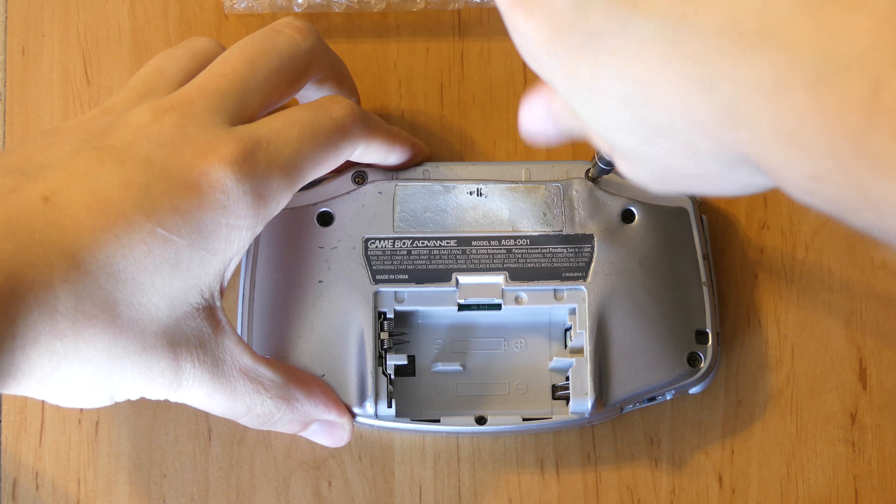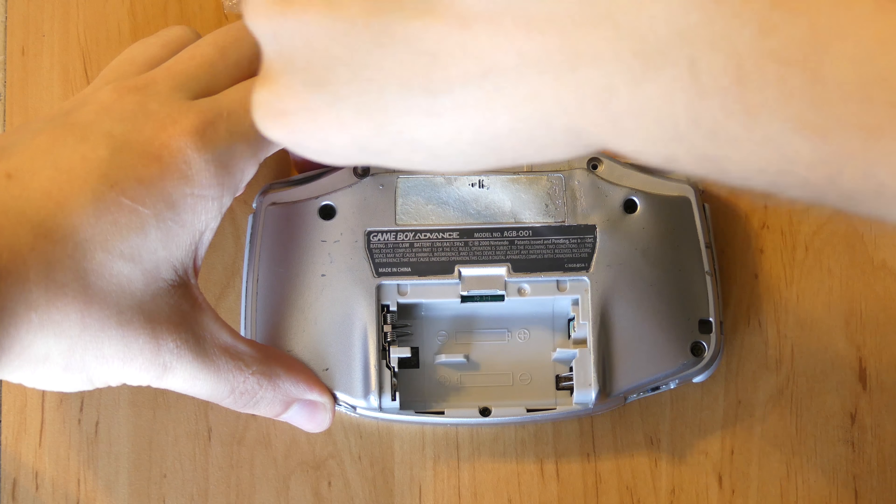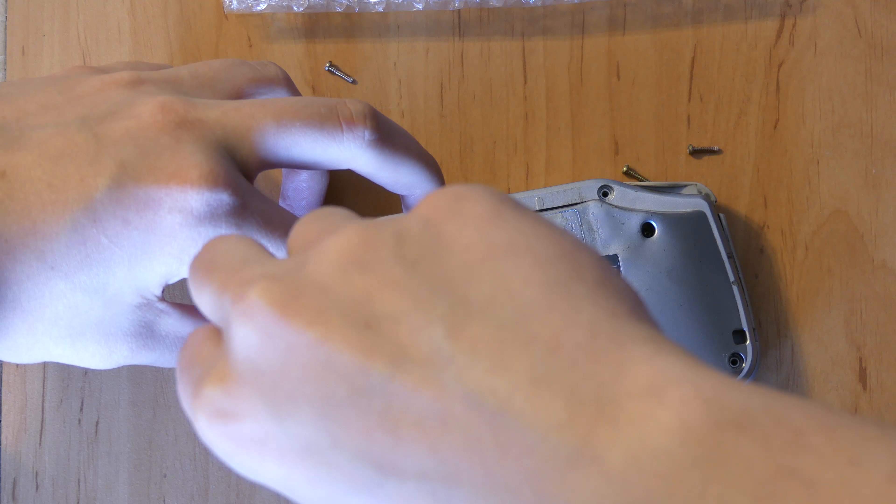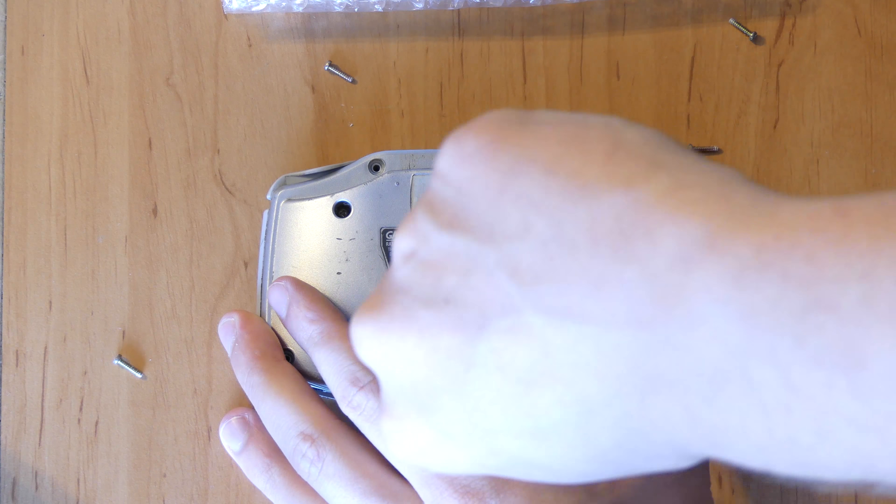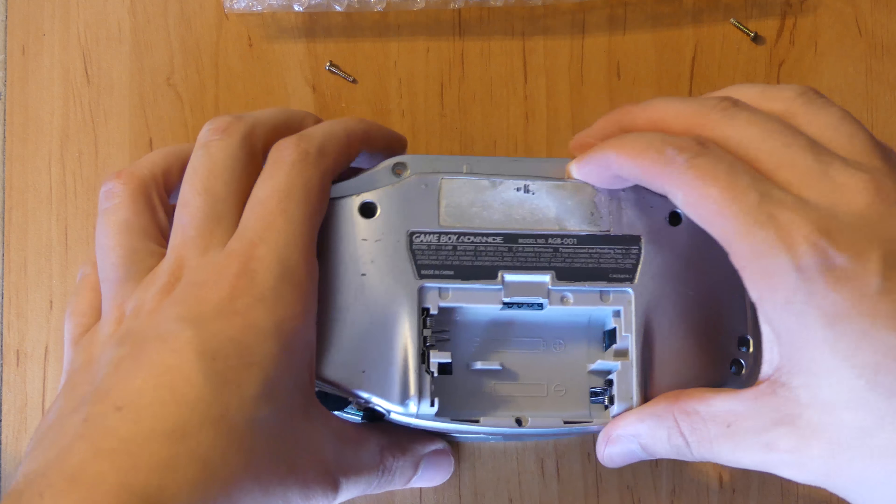The first thing you're going to need to do is remove the six tri-wing screws in the back of the case. There will be one more Phillips hidden in the battery compartment. With those out of the way, you can remove the back.